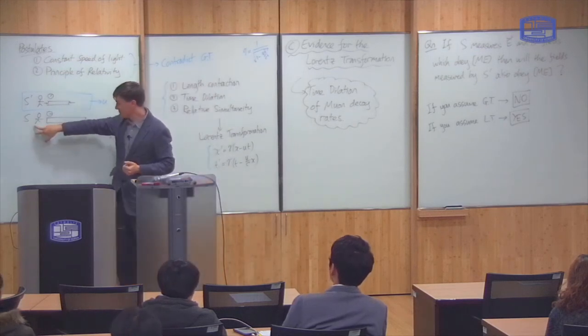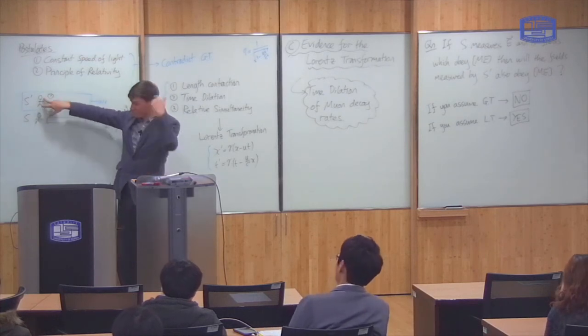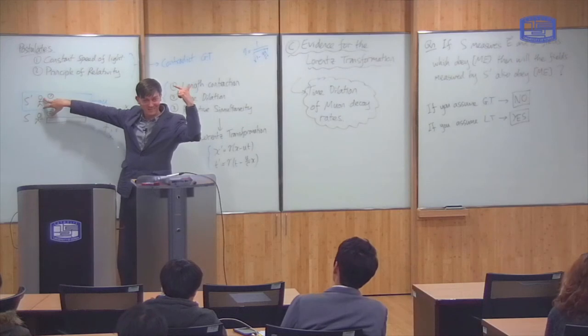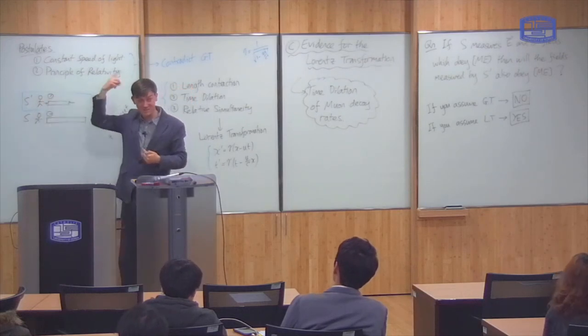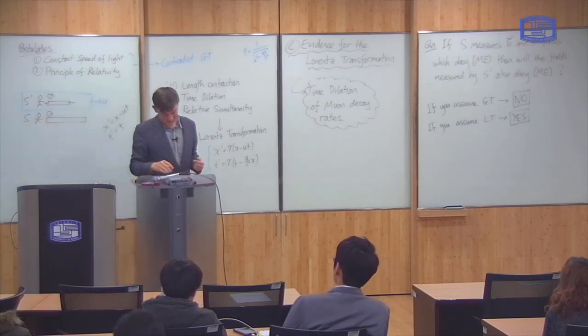From the perspective of the S observer, the S prime clock is going slowly, but the S prime's brain is also going slowly. So he doesn't notice that his clock is going slowly because his brain is also going slowly from the perspective of this observer.